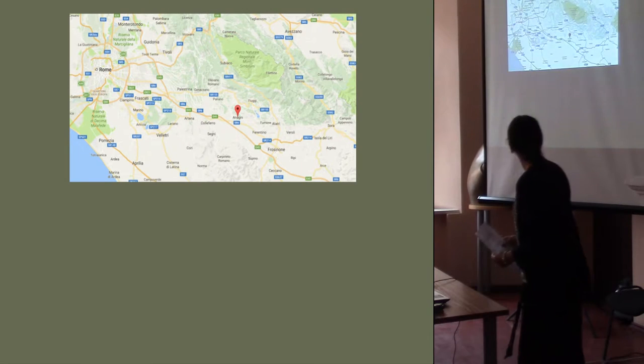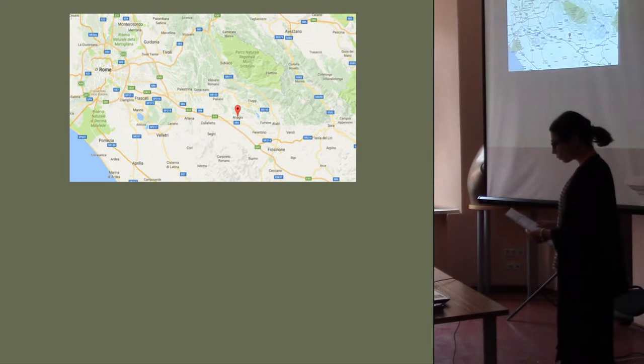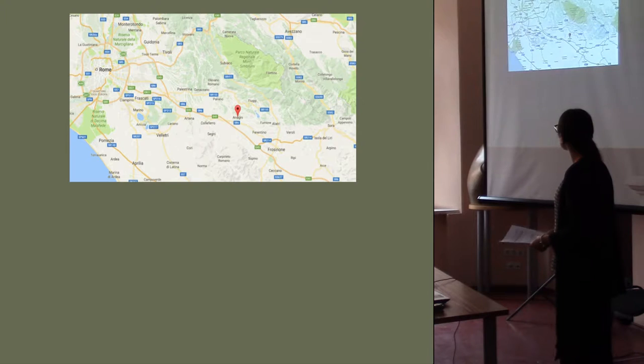Anagni is in the southern part of the region called Lazio, south side from Rome. And Anagni was founded by the Hernici, that is a tribe of Osco-Sabelian origins.